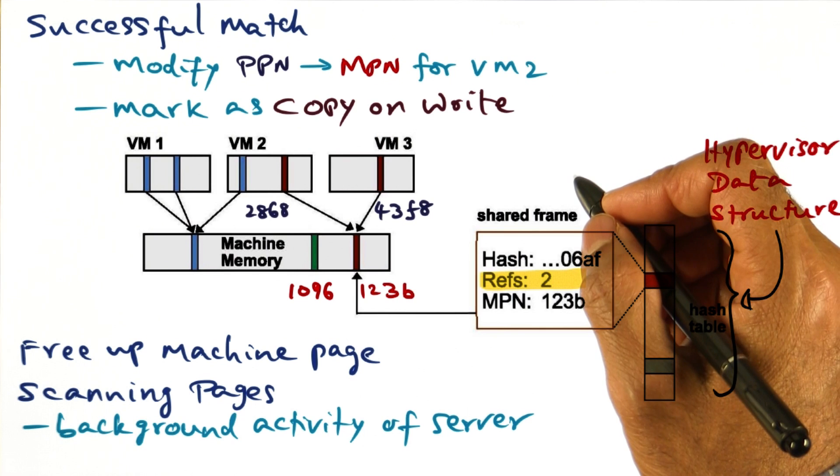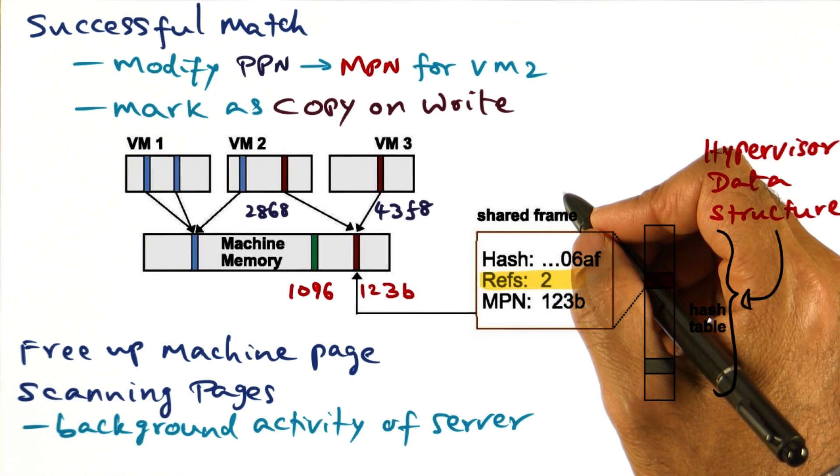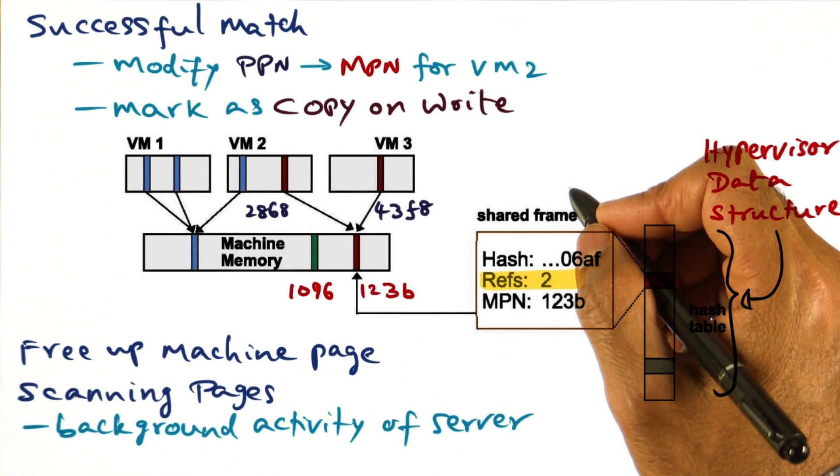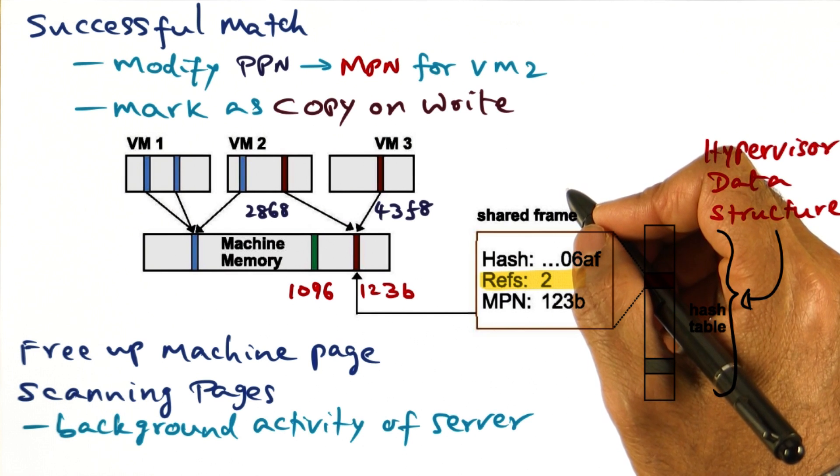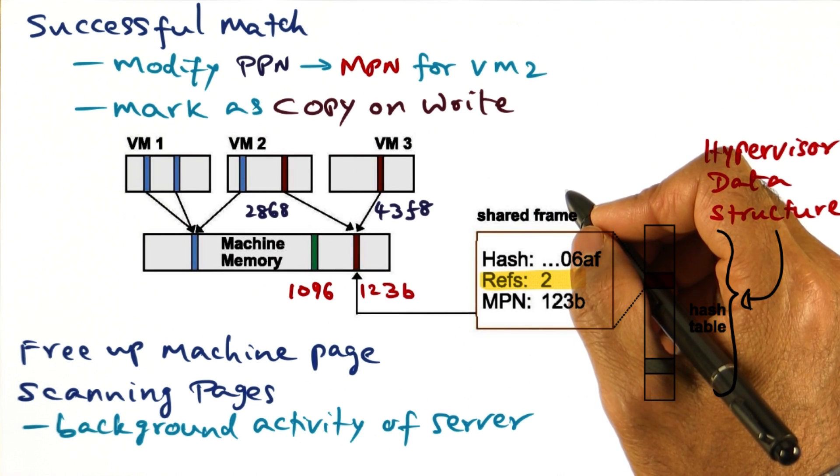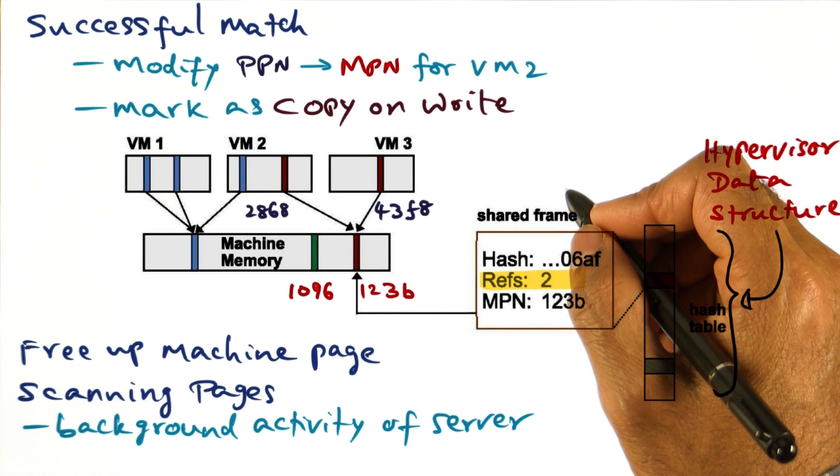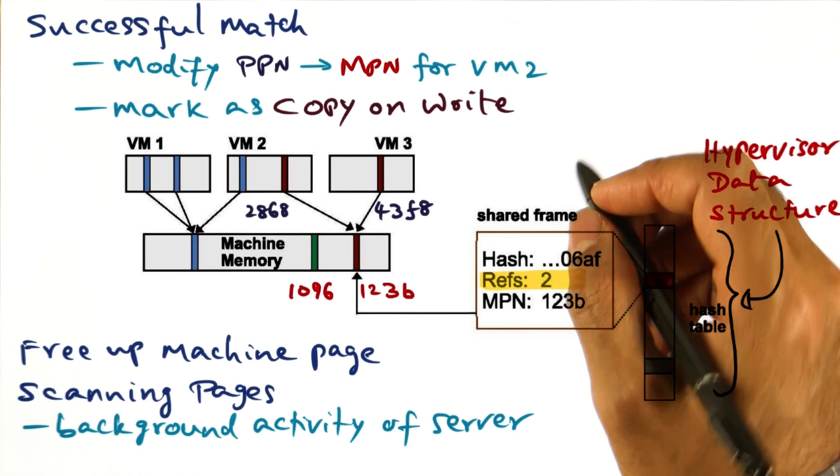And this technique is applicable to both fully virtualized as well as the para-virtualized environments. Because basically all that we are saying is that let's go through the memory contents of a virtual machine and see if the memory contents of that virtual machine, any particular page frames can be shared with other virtual machines. And if so, let's do that and free up some memory. That's the idea, can be applied to both fully virtualized and para-virtualized settings.